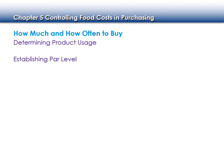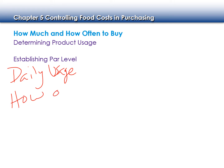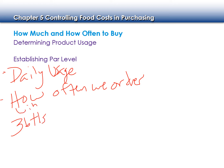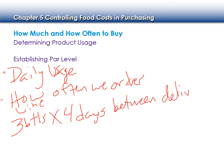We're going to establish our par level. Essentially what we need to do is take our daily usage and how often we order. Once we have these two things, we can get an idea of what our par level is going to be. So let's say we have three bottles of wine and we use three bottles of wine per day.